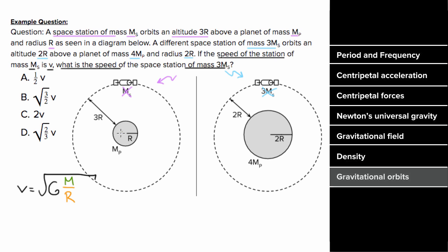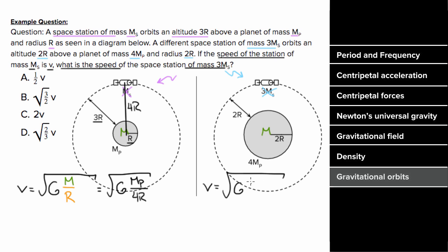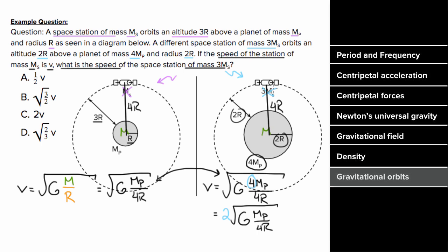A different space station of mass 3ms orbits at altitude 2r above a planet of mass 4mp and radius 2r. The center-to-center distance is 2r plus 2r, which is 4r. The speed of the 3ms station is the square root of big G times 4mp over 4r. Comparing the two expressions, the only difference is an extra factor of four inside the square root for the second station. The square root of four is two, so the 3ms station travels at two times the speed of the ms station.